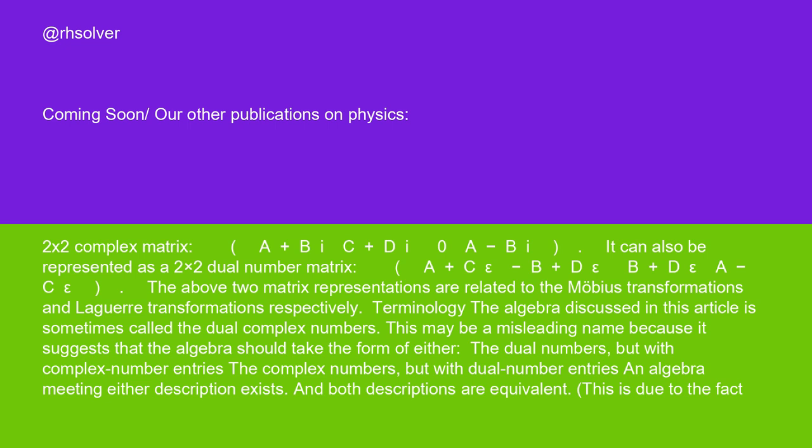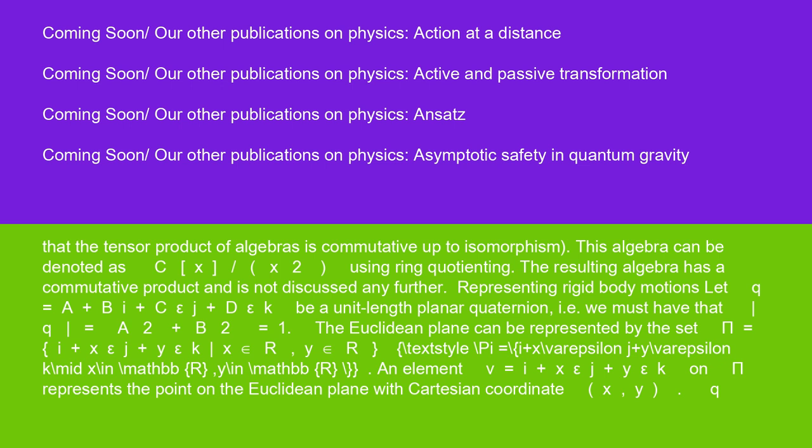The above two matrix representations are related to the Mobius transformations and Laguerre transformations respectively. Terminology: The algebra discussed in this article is sometimes called the dual complex numbers. This may be a misleading name because it suggests that the algebra should take the form of either the dual numbers but with complex number entries, or the complex numbers but with dual number entries. An algebra meeting either description exists, and both descriptions are equivalent. This is due to the fact that the tensor product of algebras is commutative up to isomorphism. This algebra could be denoted as C x R[x]/x^2 using ring quotienting. The resulting algebra has a commutative product and is not discussed any further.